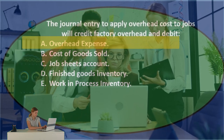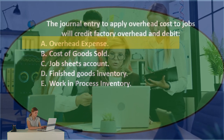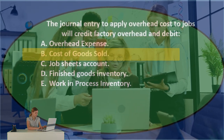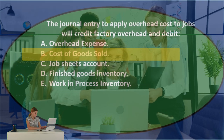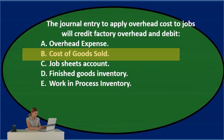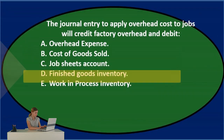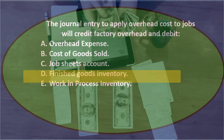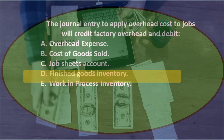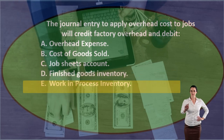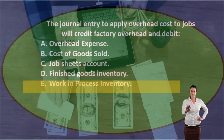Overhead expense, B: cost of goods sold, C: job sheets account, D: finished goods inventory, or E: work in process.